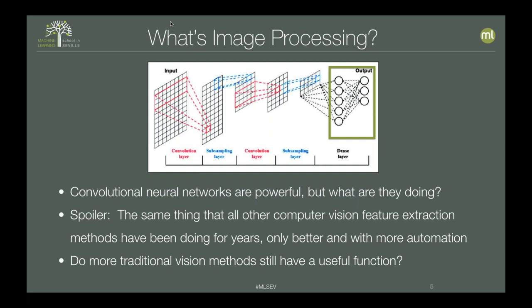Convolutional neural networks essentially design their own features that get extracted. But finally, you end up with a bunch of features and you classify with those features. So in most cases, when you're doing image classification, you get these glorified feature extractors. The question is whether more traditional, non-CNN-based vision techniques still have a place in the algorithmic repertoire — and I'm going to argue that they do.